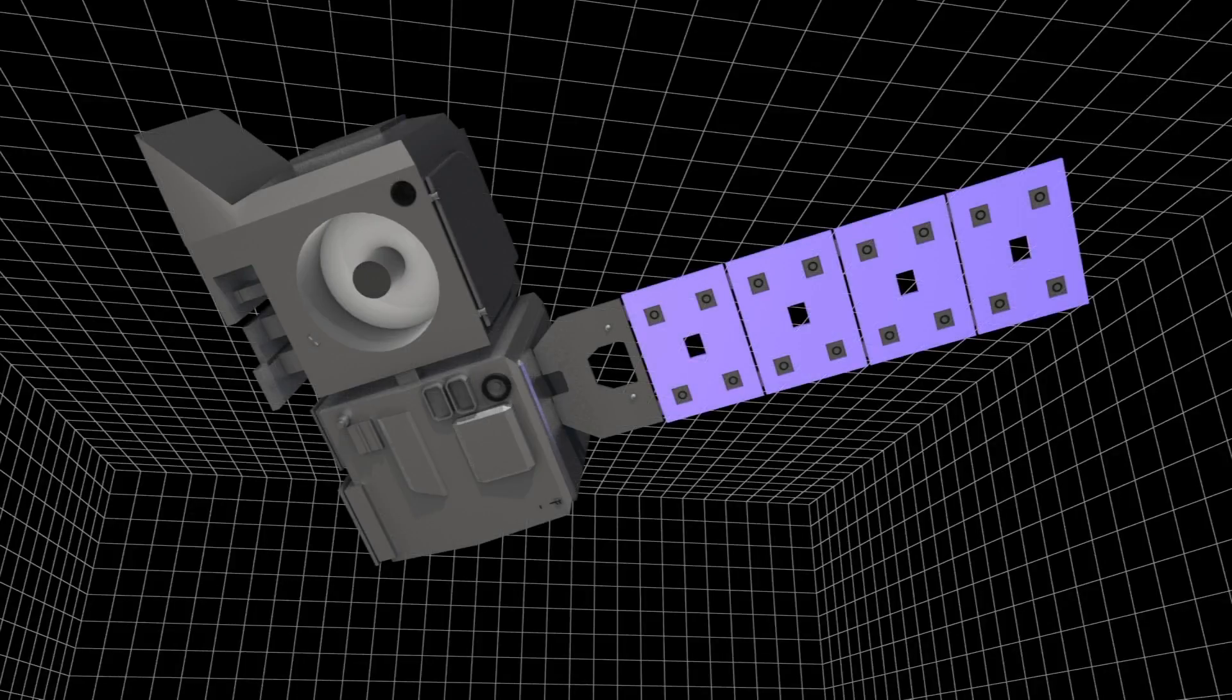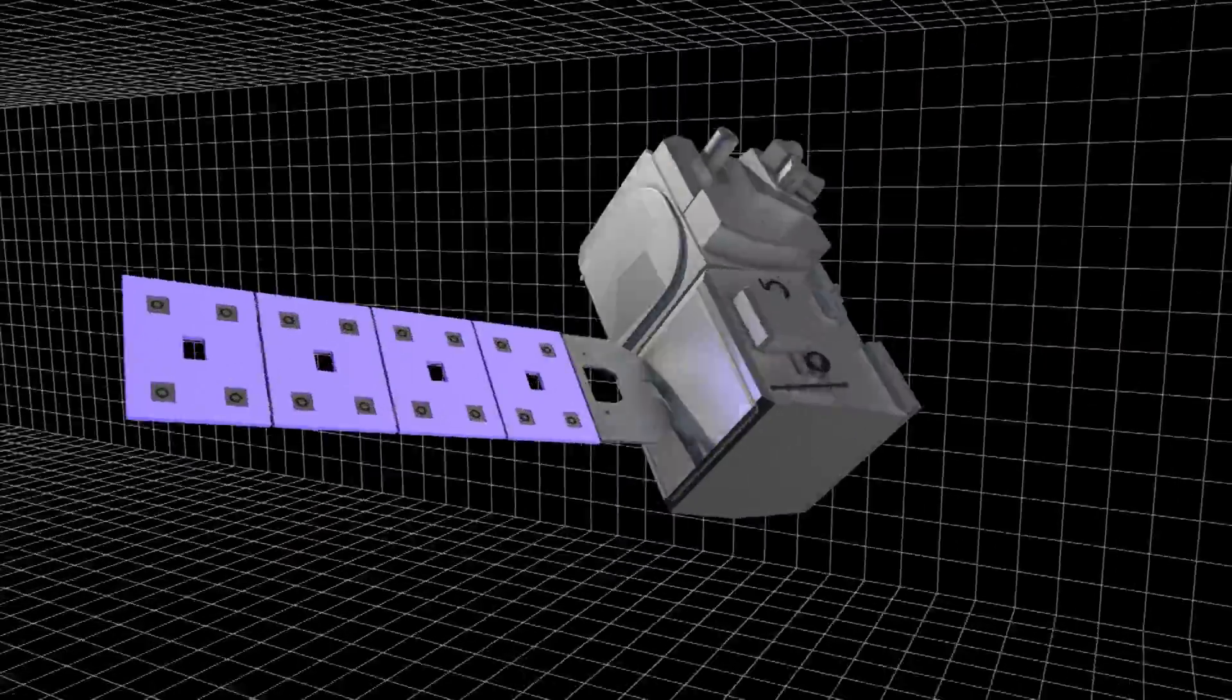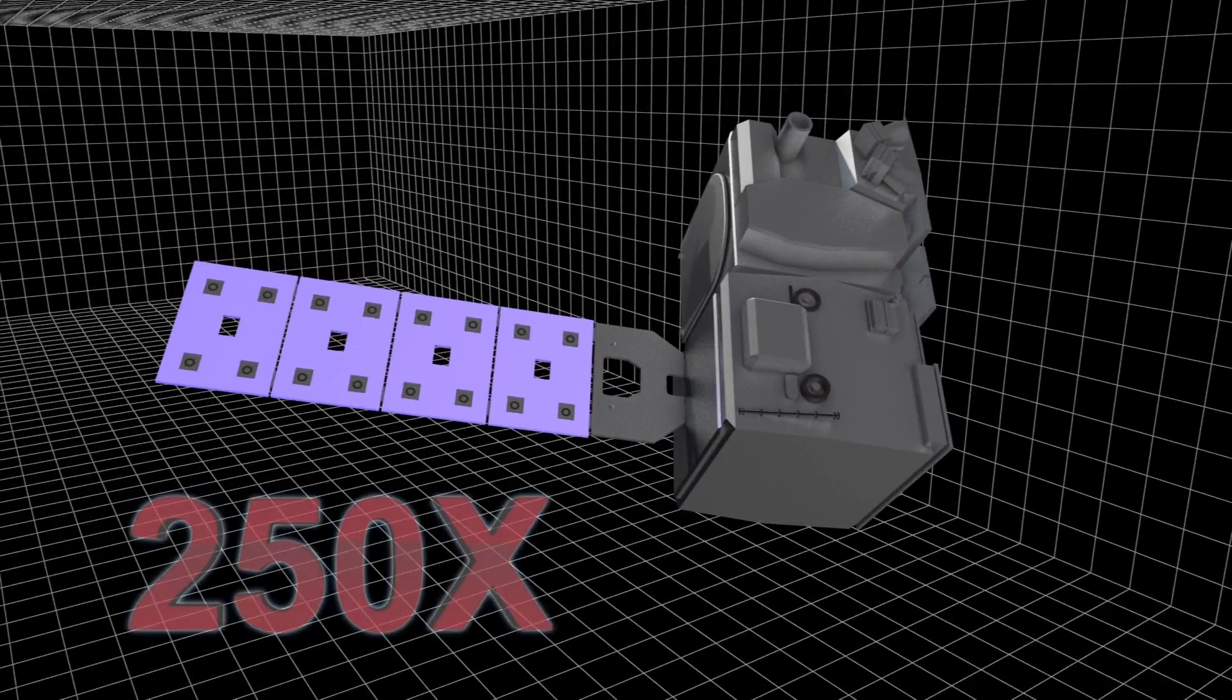NASA's new laser, ICESat-2, would have the ability to collect more than 250 times the height measurements of polar ice compared to its predecessor.